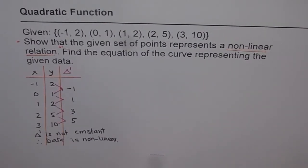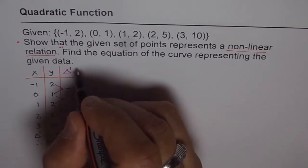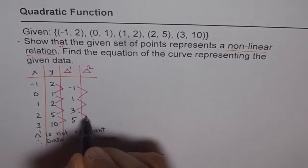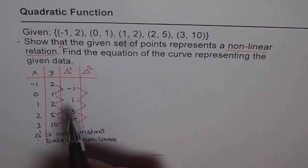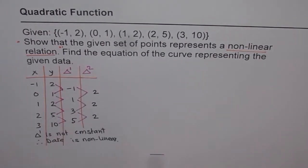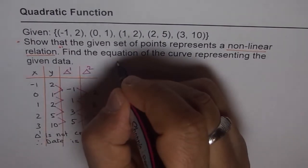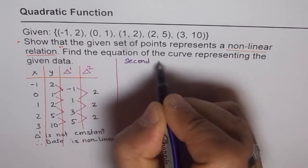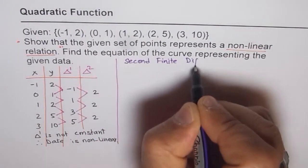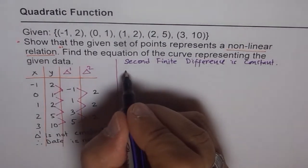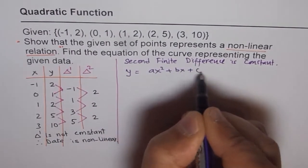So we have done the first part. Now the next part is to find the equation which can represent the data. Let's continue with the finite difference and find the second finite difference, which is again the same process of y2 minus y1. Now: 1 minus (-1) is 2, 3 minus 1 is 2, and 5 minus 3 is also 2. The second finite difference is constant, so we can write that the second finite difference is constant.